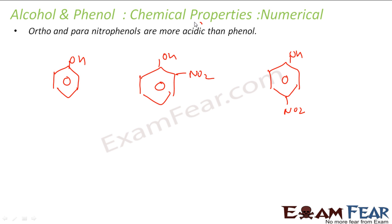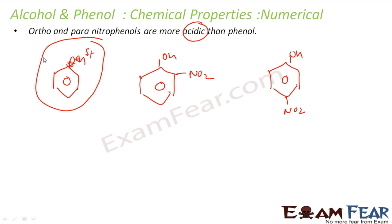First, let's talk about why phenol is acidic. The phenyl group is an electron-withdrawing group — it sucks electrons. The oxygen is electron-hungry and tries to take electrons from the hydrogen, giving it a partial positive charge. The nitro group is an even stronger electron-withdrawing group.